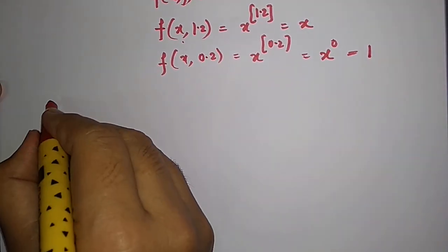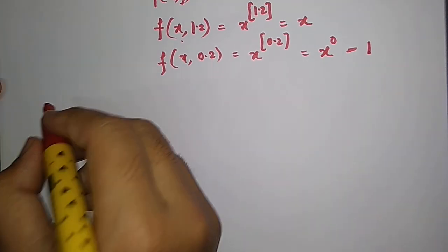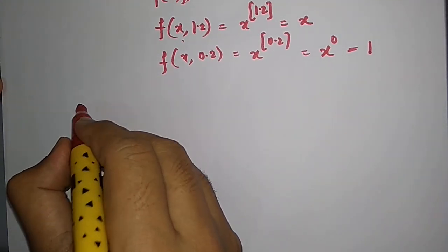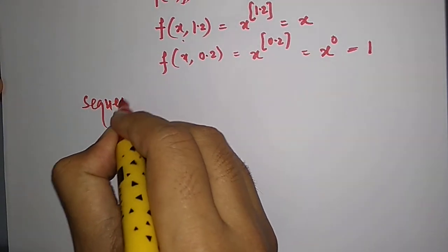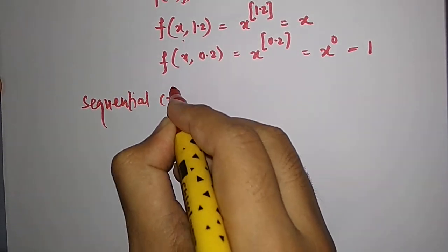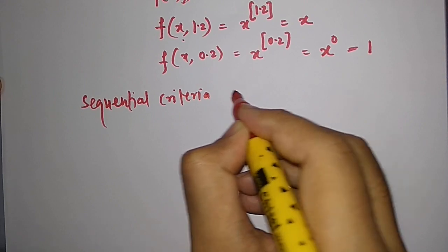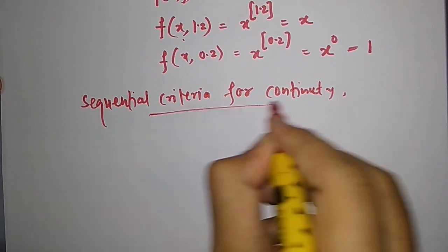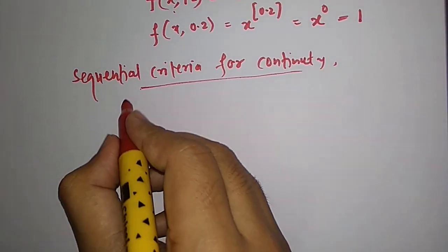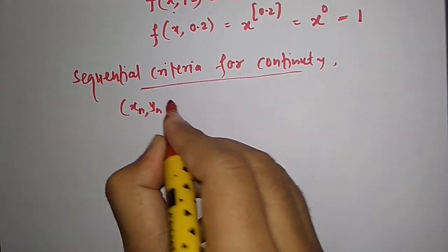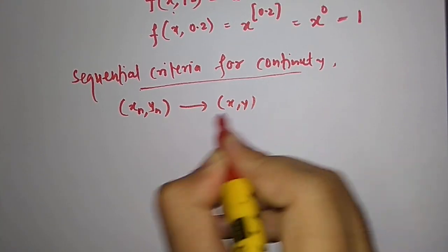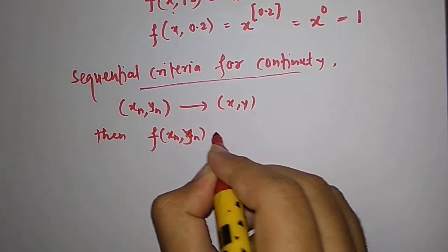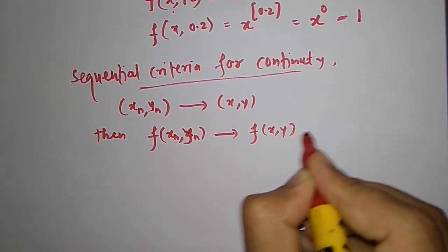So let us check the first option: whether the function is continuous or not. We know a very important criterion of continuity which is called the sequential criterion for continuity, which we need to use here. It says: if you have a sequence (xₙ, yₙ) which converges to (x, y), then f(xₙ, yₙ) must converge to f(x, y).